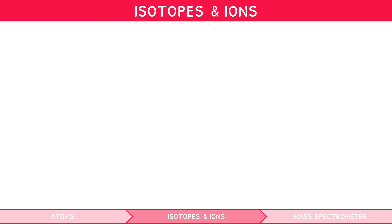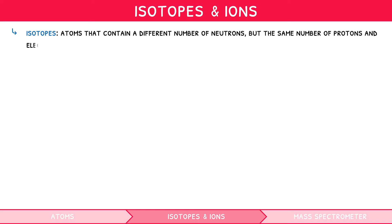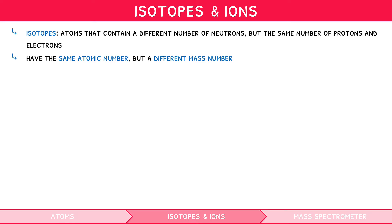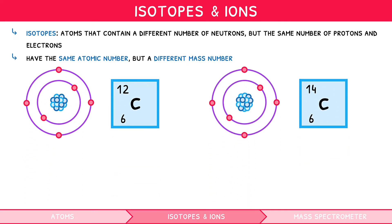Let's take a minute to define these two terms, as they come up very frequently. Isotopes are atoms that contain a different number of neutrons, but the same number of protons and electrons. They therefore have the same atomic number, but a different mass number. For example, carbon is found as carbon-12 and carbon-14, among others. Carbon-12 has six neutrons, six protons, and six electrons. Carbon-14 has the same number of protons and electrons, but two more neutrons.